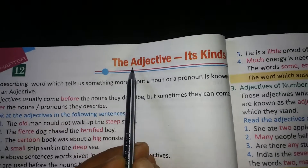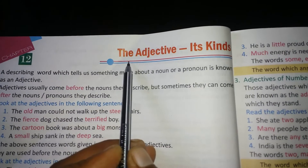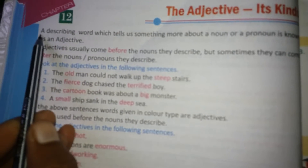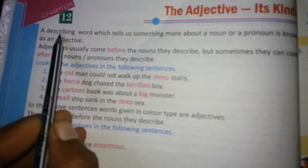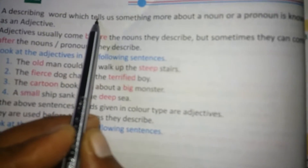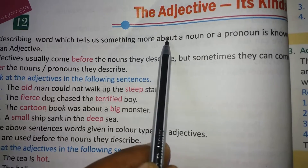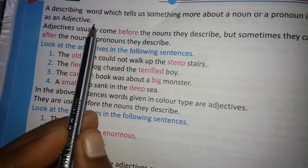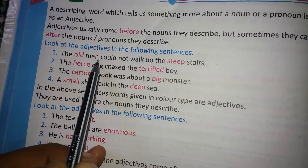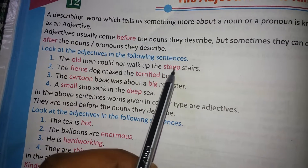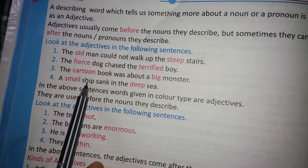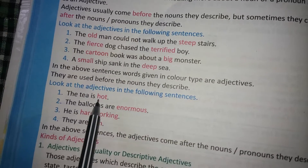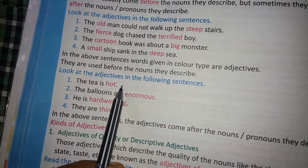Hello students, welcome back to KG Classes. Today I shall teach you about adjectives and its kinds. A describing word which tells us something more about a noun or pronoun is known as an adjective. For example: the old man could not walk up the steep stairs; the small ship sank in the deep sea; the tea is hot.